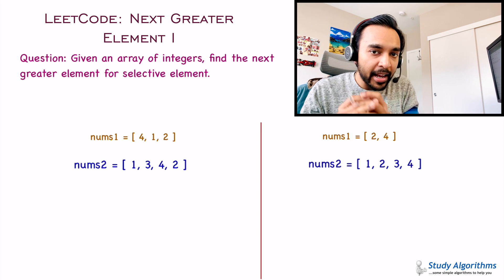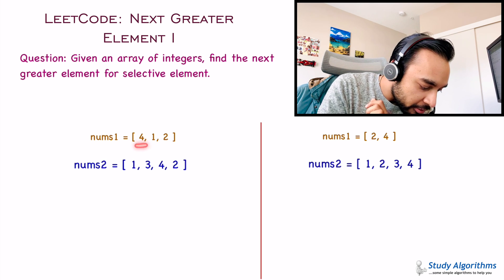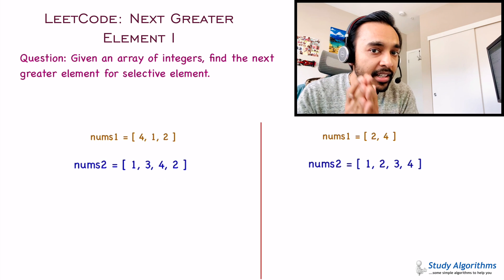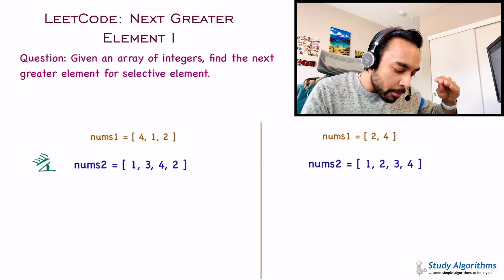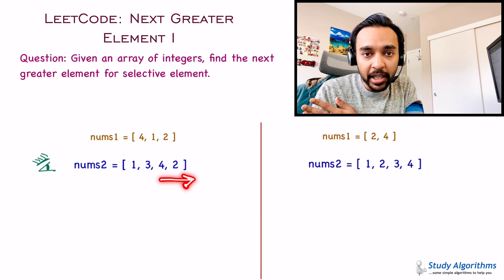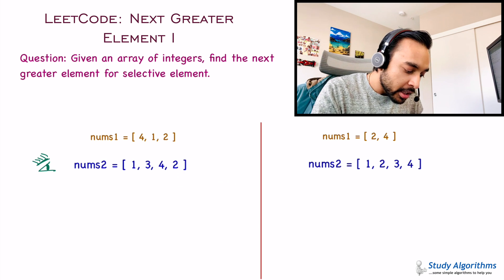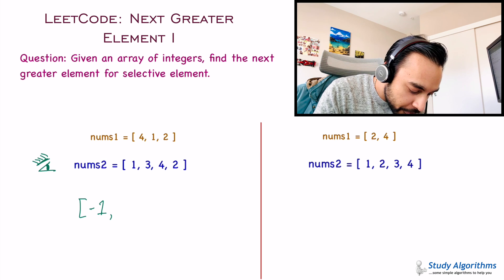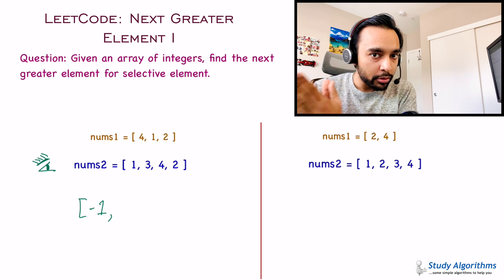When I say the next greater element, what does that mean? For example, when looking at element 4, it is present in the array, and to find the next greater element, look at the array from the left-hand side. What is the next greater element to the right of element 4? You cannot find any element greater than 4, so you simply write minus 1 — meaning you are unable to find an element greater than 4 to the right.